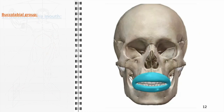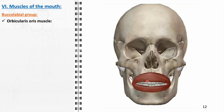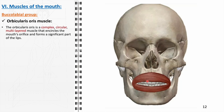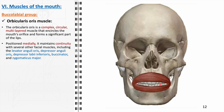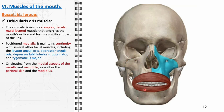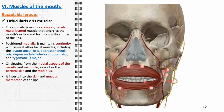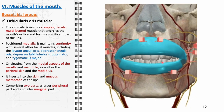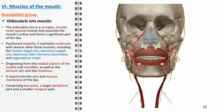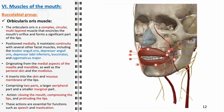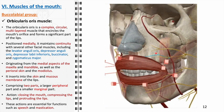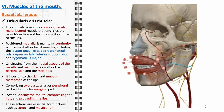The orbicularis oris, the first of the buccolabial group, is a complex, circular, multilayered muscle encircling the mouth's orifice and forming a significant part of the lips. It maintains continuity with several other facial muscles, including the levator anguli oris, depressor anguli oris, depressor labii inferioris, buccinator, and zygomaticus major. Originating from the medial aspects of the maxilla and mandible, as well as the perioral skin and the modiolus, it inserts into the skin and mucous membrane of the lips. It is crucial for closing the mouth, compressing and protruding the lips — essential for speech and mastication. Blood supply comes from the superior and inferior labial branches of the facial artery, and innervation from the buccal and mandibular branches of the facial nerve.